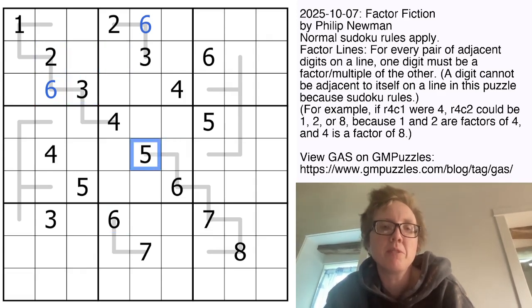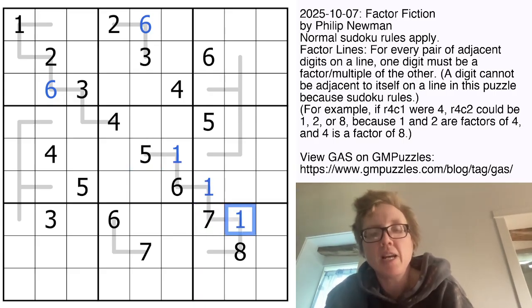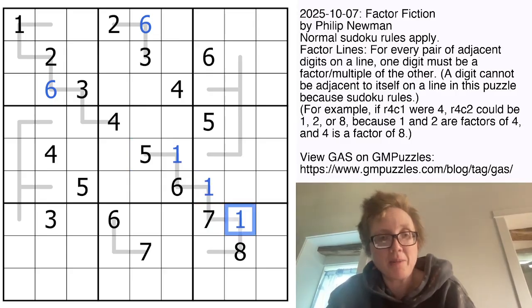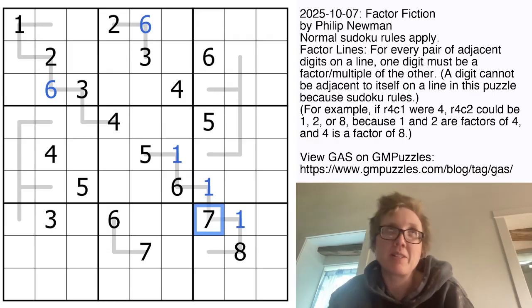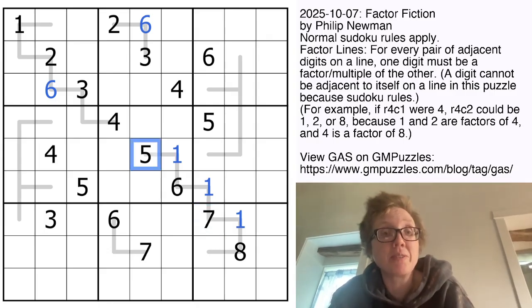If we look at some prime numbers, those can only ever go next to 1, so 7 is prime. Or not all prime numbers, actually, but 5 or 7 specifically, because they are too big to have multiples in the range of sudoku digits. 2 and 3 are also prime, but they could go next to other digits. Anyways, 5 and 7 can only go next to 1.